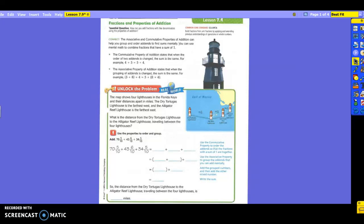All right, today we're going to discuss fractions and properties of addition. So let's take a look here at the top. There are two little bullets that we need to read through. The connect section says the associative and commutative properties of addition can help you to group and order addends to find sums mentally. You can use mental math to combine fractions that have a sum of one.